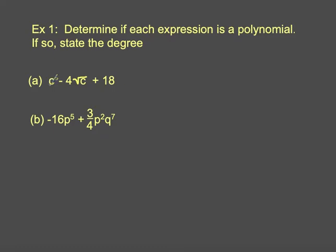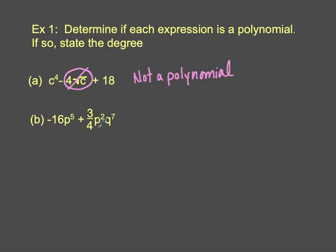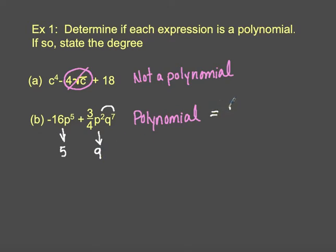My second example: I have negative 16p to the fifth — that's okay — and three fourths p squared q to the seventh — that's also okay. So this one is a polynomial, and I need to find the degree. The degree of the first term is five, and the degree of the second term would be two plus seven, or nine. I take the highest degree to find the degree of the polynomial, and that would be nine. It's not the sum of all degrees — it's the highest one.